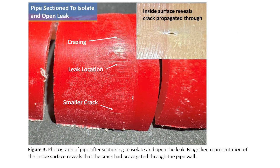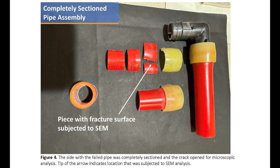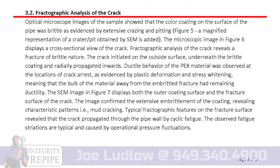Figure three: photograph of the pipe after sectioning to isolate and open the leak. A magnified representation of the inside surface reveals that the crack had propagated through the pipe wall. Figure four: the side with the failed pipe was completely sectioned and the crack opened for microscopic analysis. The tip of the arrow indicates the location that was subjected to SEM analysis.